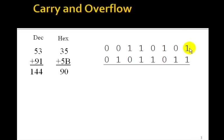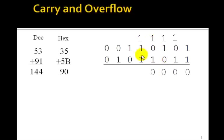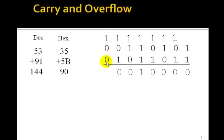Let's do this binary addition. 1 plus 1 is 0 with a carry; 1 plus 1 is 0 with a carry; 1 plus 1 is 0 with a carry; 1 plus 1 is 0 with a carry; 1 plus 1 plus 1 is 1 with a carry; 1 plus 1 is 0 with a carry; 1 plus 1 is 0. Notice we're getting a carry from bit 6 to bit 7. Then 1 plus 1 is just 1 with no carry, so the carry bit is 0, indicating that 144 is the correct unsigned answer — less than 255. The result is 90 hex, as it should be.